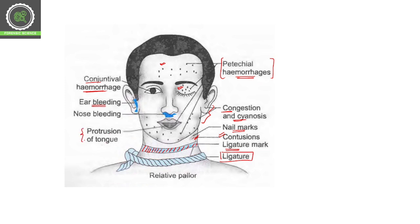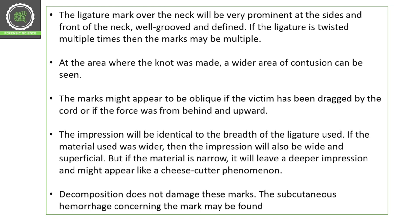Ear bleeding, nose bleeding, and protrusion of the tongue — the tongue might be out of the mouth. The ligature mark over the neck will be very prominent at the sides and in the front of the neck. It will be well-grooved and well-defined. If the ligature is twisted multiple times, we can even see multiple ligature marks on the neck.